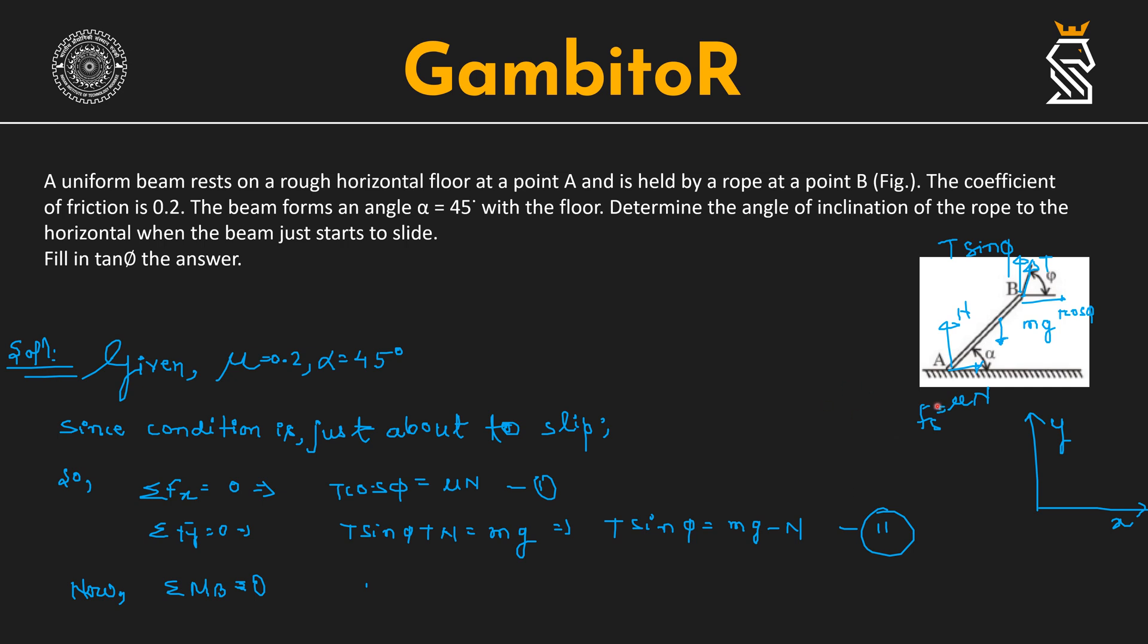Now our vertical balance: taking positive forces along the positive y-axis to be positive and toward the negative to be negative. After rearranging the equation I got T sin phi plus N equal to mg, or T sin phi equal to mg minus N. This is equation 2.